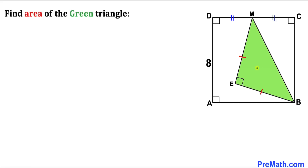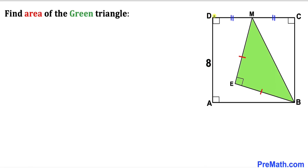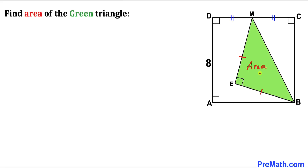In this video we have got a green triangle EBM fully confined in a square ABCD, such that the side length of this square is 8 units. Segment DM is equal to segment MC, meaning M is the midpoint. Furthermore, the green triangle is an isosceles right triangle, since the two equal side lengths form a right angle. Our task is to calculate the area of this green shaded triangle.